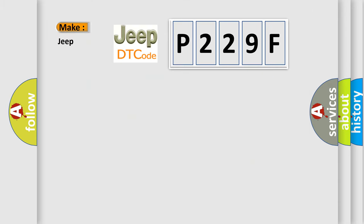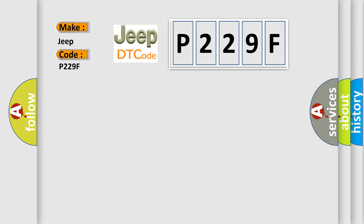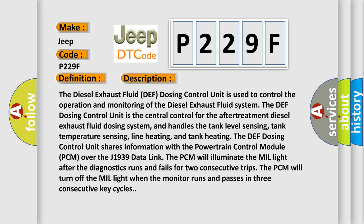So, what does the diagnostic trouble code P229F interpret specifically for car manufacturers? The basic definition is: Lost communication with diesel exhaust fluid control unit. The diesel exhaust fluid (DEF) dosing control unit is used to control the operation and monitoring of the diesel exhaust fluid system. It is the central control for the after-treatment DEF dosing system, and handles tank level sensing, tank temperature sensing, line heating, and tank heating. The DEF dosing control unit shares information with the powertrain control module (PCM) over the J1939 data link. The PCM will illuminate the MIL light after the diagnostics runs and fails for two consecutive trips, and will turn off the MIL light when the monitor runs and passes in three consecutive key cycles.